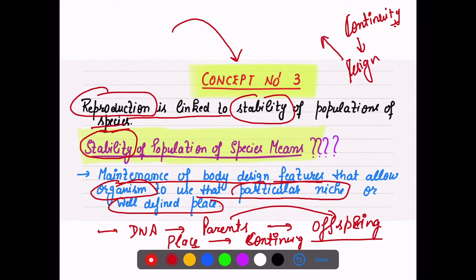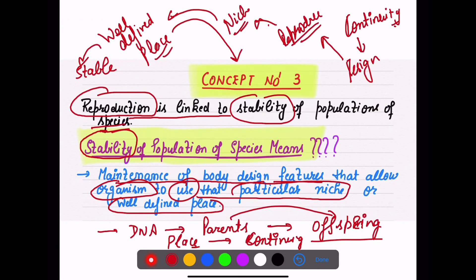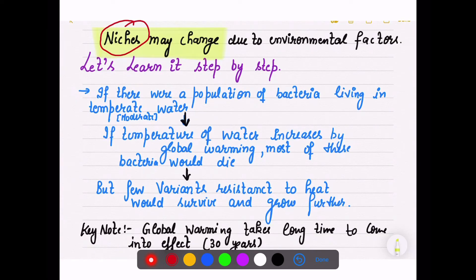Human beings have their particular body designs; dogs have their particular body designs and features. When they reproduce in their particular niche — their well-defined place — they produce more organisms, thereby filling that place and making the population stable. If reproduction is not happening, numbers decrease, body design features are not transferred forward — that leads to non-stability. But because of reproduction, stability of the population of different species is maintained. A niche sometimes changes due to environmental factors.